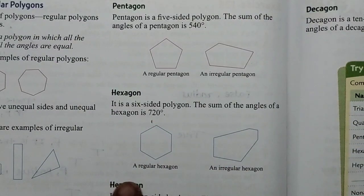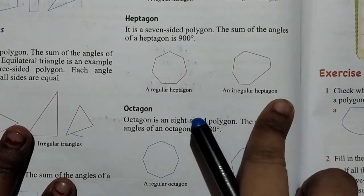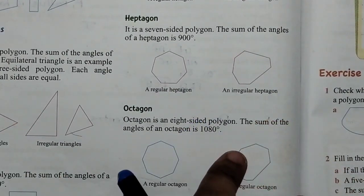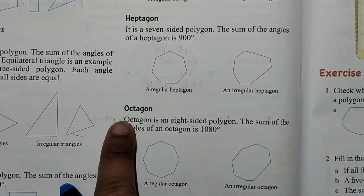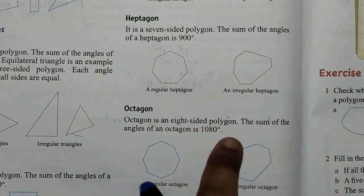This is heptagon, it is 7-sided and the sum of the angles is 900 degrees. Next is the octagon. Octagon is 8-sided polygon.